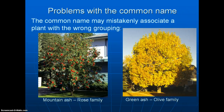Also, a common name itself may make people think a plant is associated with a group that's not correct. For example, mountain ash is not an ash at all — it's actually part of the rose family — whereas the true ashes are part of the olive family, such as green ash and white ash. So I often get people saying mountain ash is an ash, and it's not.